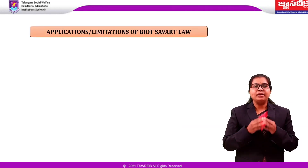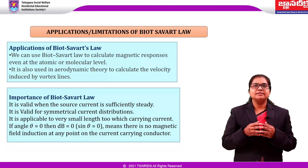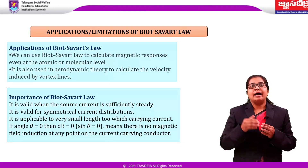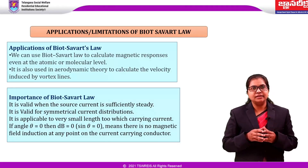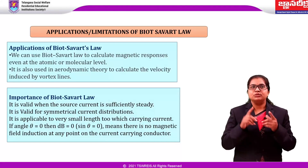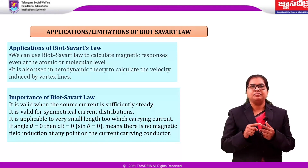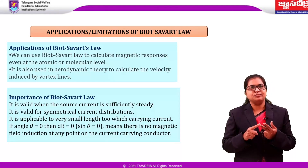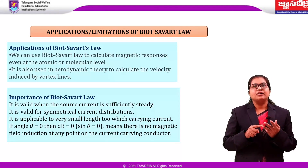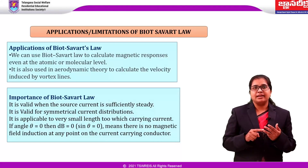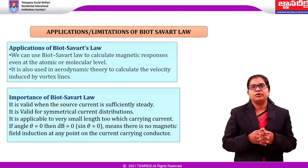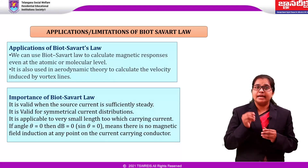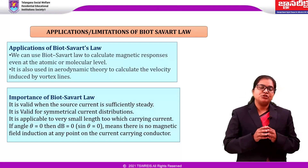Applications of Biot-Savart's law: We can use Biot-Savart's law to calculate magnetic responses even at the atomic or molecular level. It is also used in aerodynamic theory to calculate velocity induced by vortex lines. Importance of Biot-Savart's law: It is valid when the source current is sufficiently steady. It is valid for symmetrical current distributions. It is applicable to a very small length of current-carrying conductor. If the angle θ is 0, then dB is 0, because sin 0 is 0 — there is no magnetic field induction at any point on the current-carrying conductor.